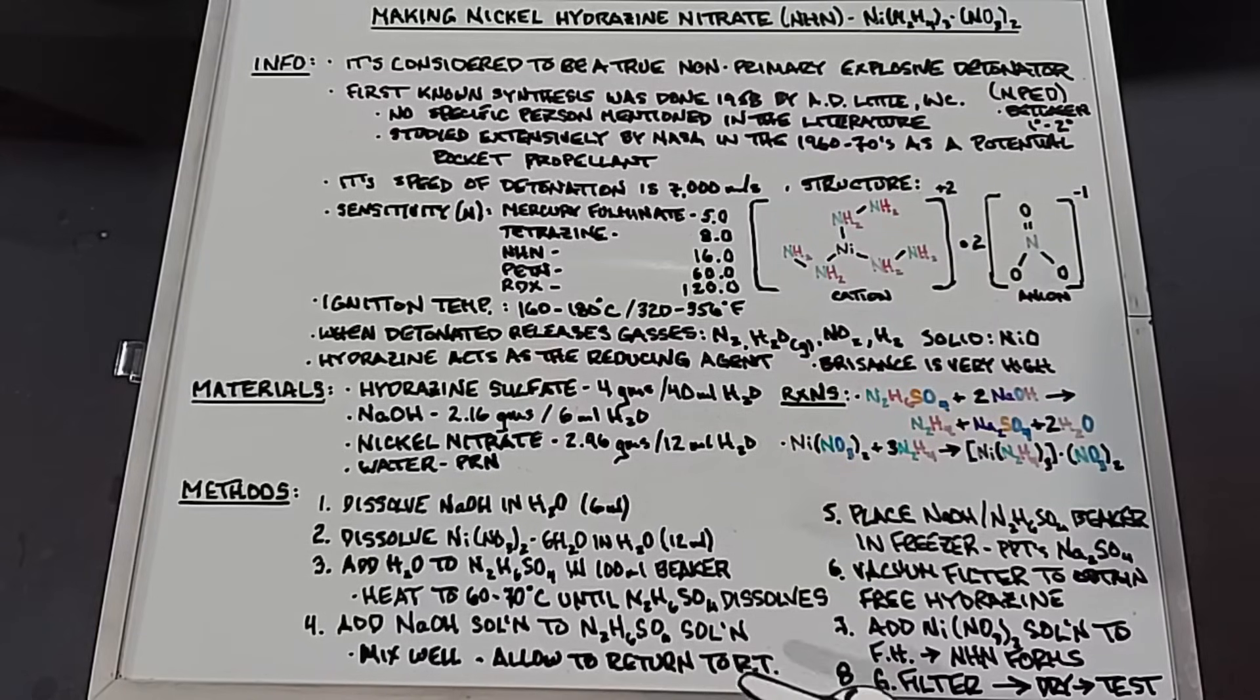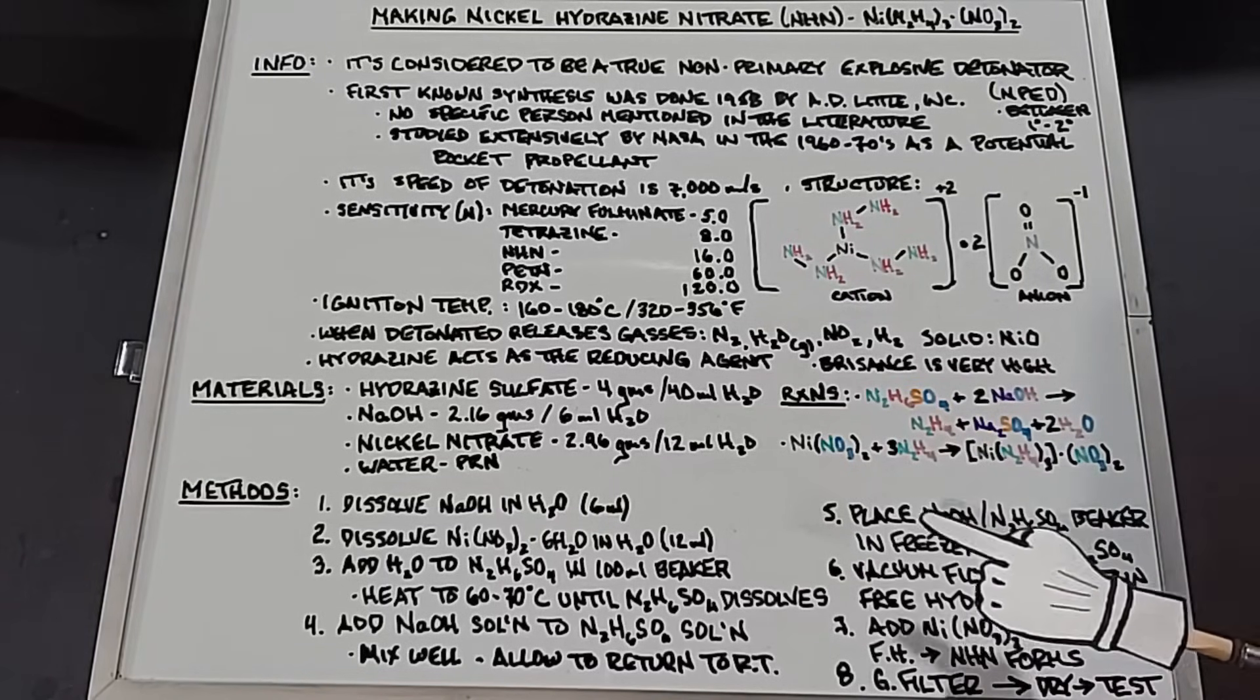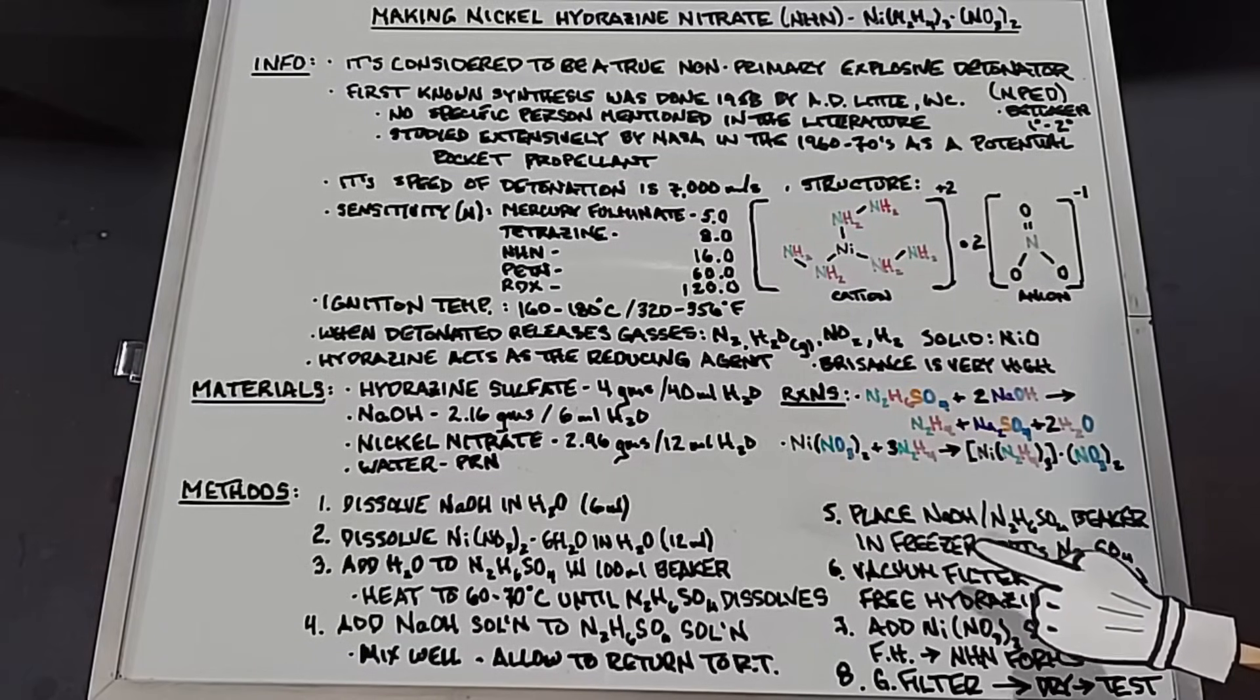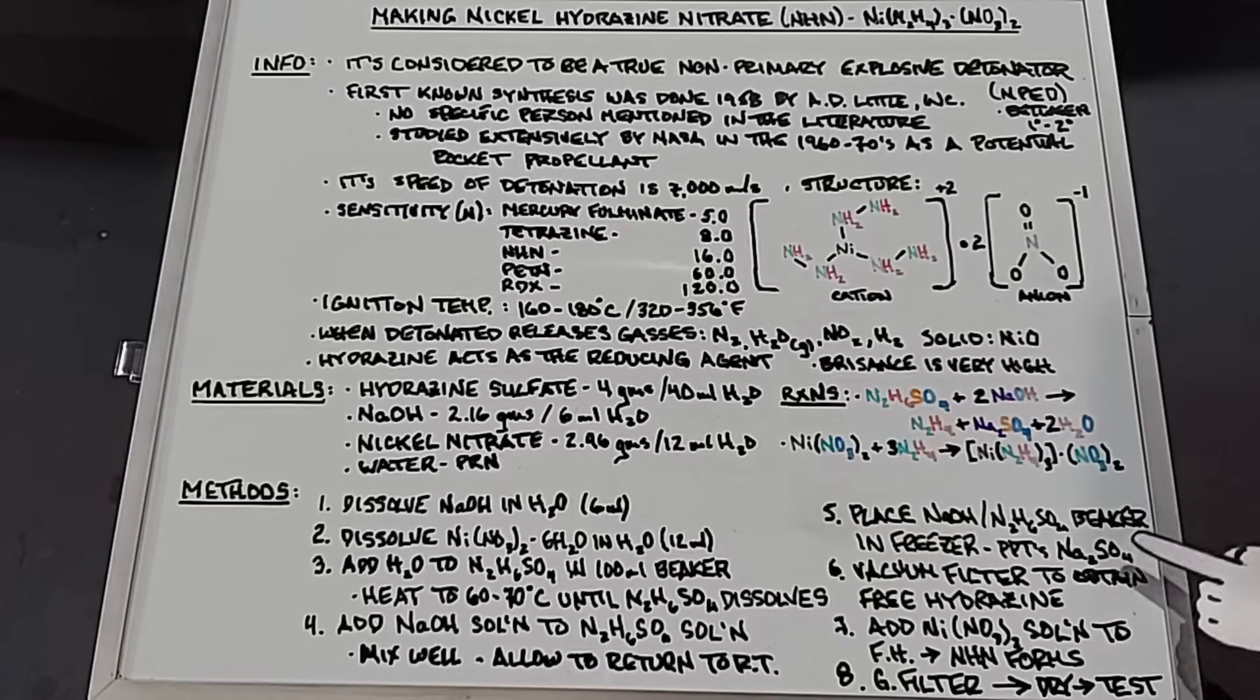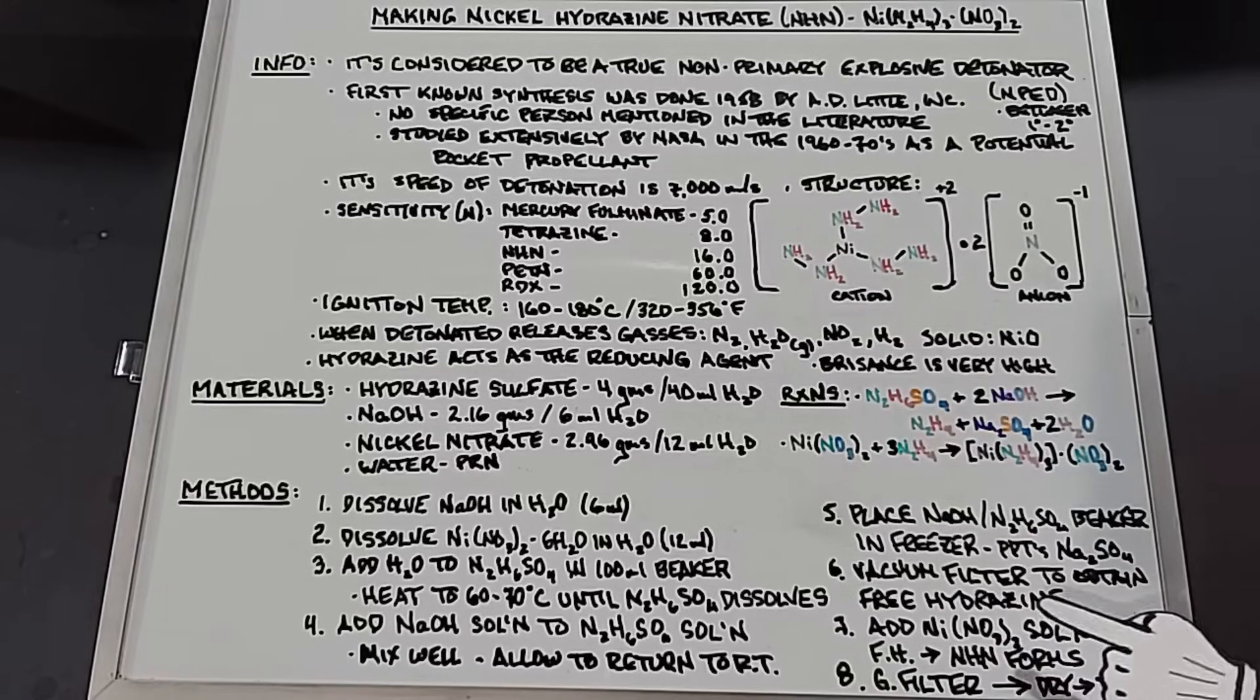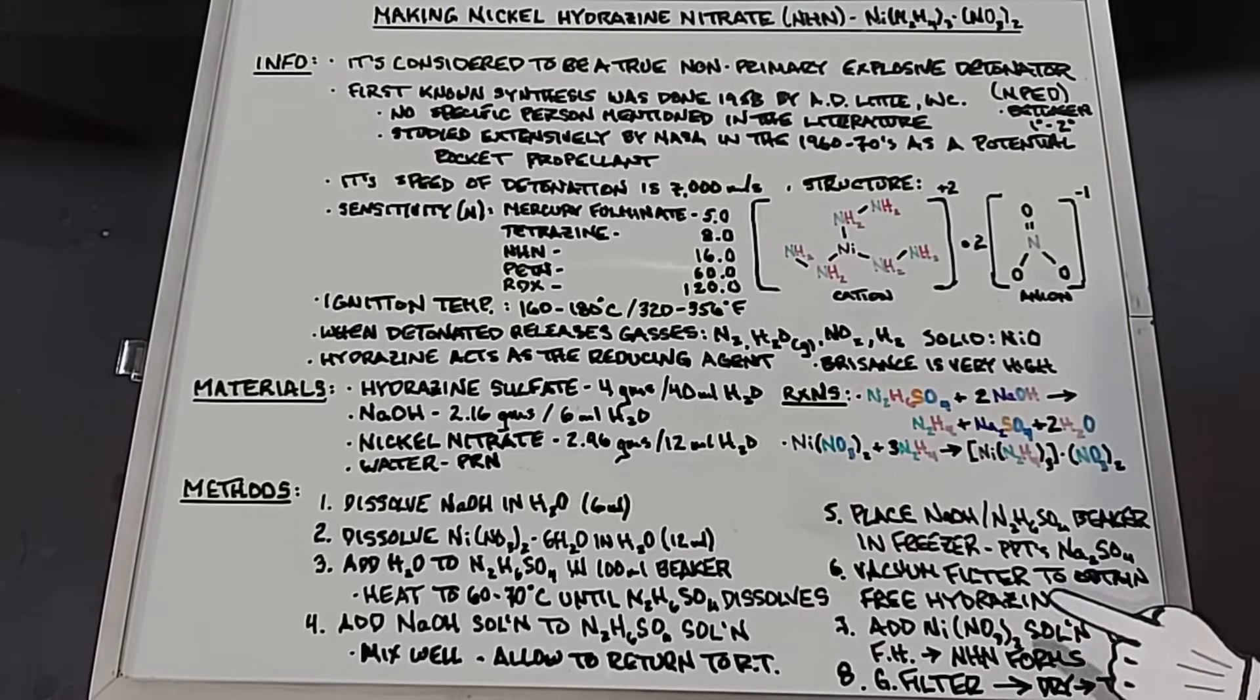Before number 5, you place that beaker in a freezer, which will precipitate the sodium sulfate. I found this happens right around three, three and a half degrees celsius without fail. So as long as you watch it carefully, you can put it in a freezer. If you leave it in there too long, the whole thing will turn into ice, of course, but as long as you monitor it right around three degrees celsius, you should get your precipitate sodium sulfate, which you then can vacuum filter safely to obtain a solution of free hydrazine.